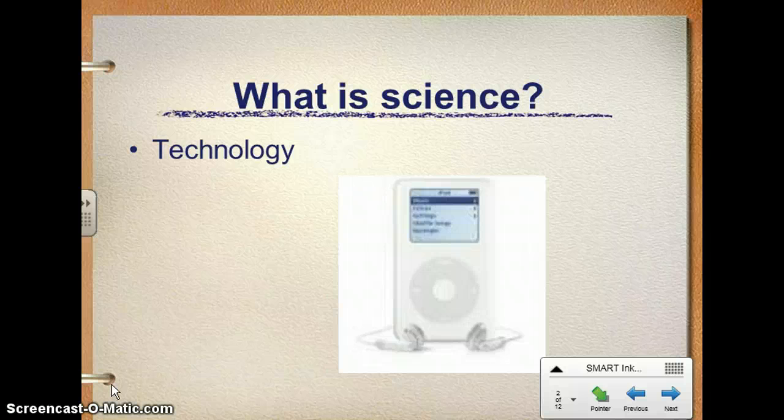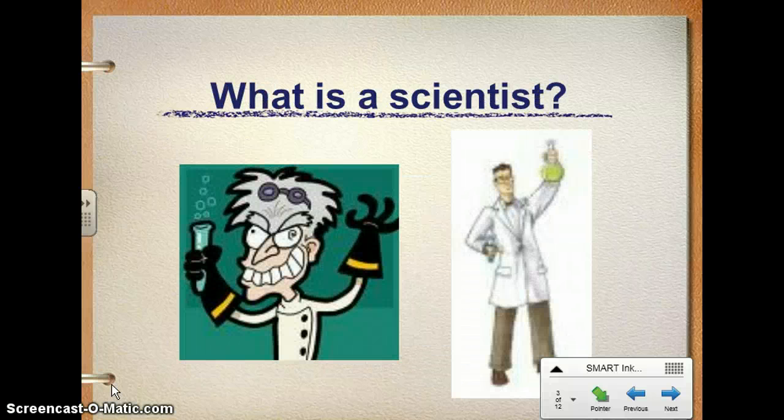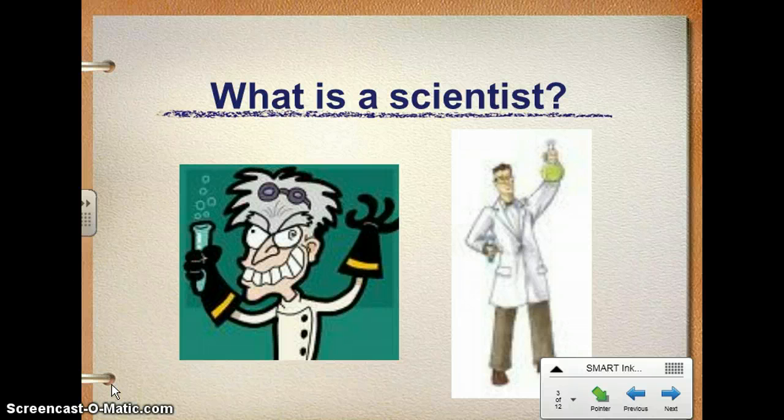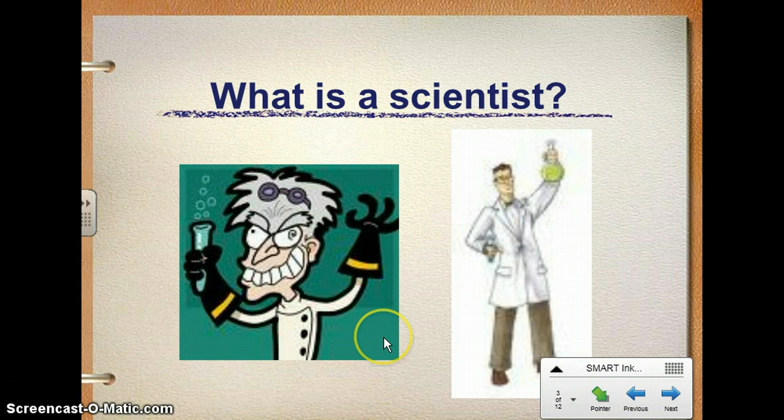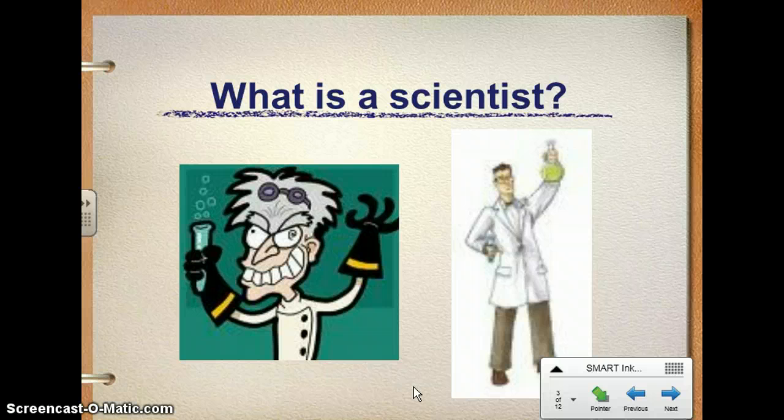But I want you to jot down something. Give me your definition of science. The next thing I want you to do is write down your definition of a scientist. When we hear the word scientist, sometimes we get a mental image. It may be the mad scientist, it may be someone discovering something for the first time. But what do you think of when you think of a scientist? What is a scientist? Make sure you jot that down in your notes too.